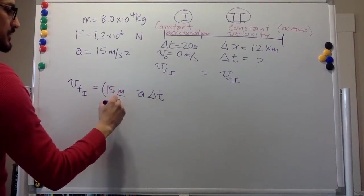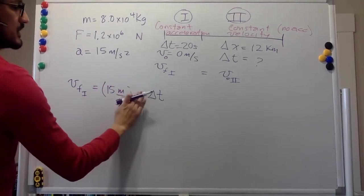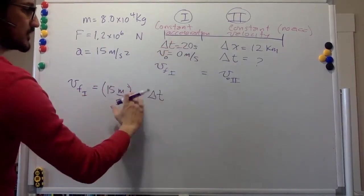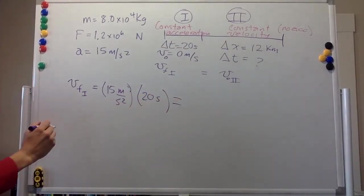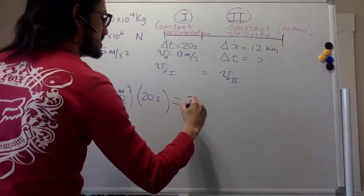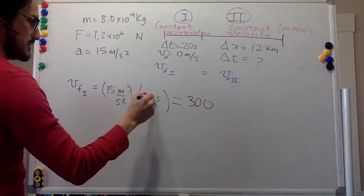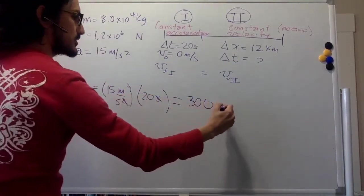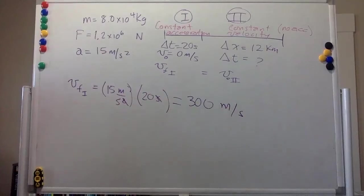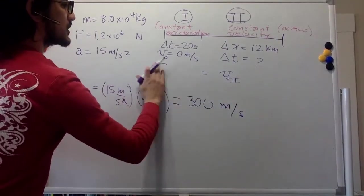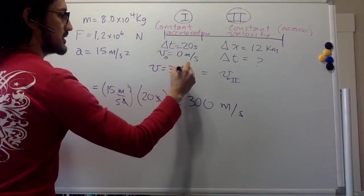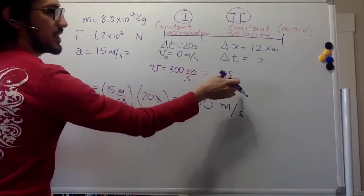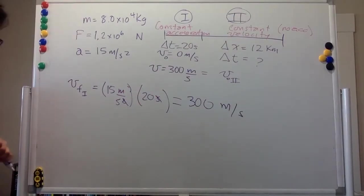And the final velocity is just going to be the acceleration, so the 15 meters per second squared, and the time is 20 seconds. So that is 300, second and second goes away, so that's just meters per second. So we can put it over here. The velocity is 300 meters per second, and it's the velocity over here also in the second segment.